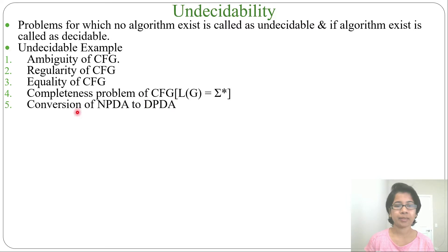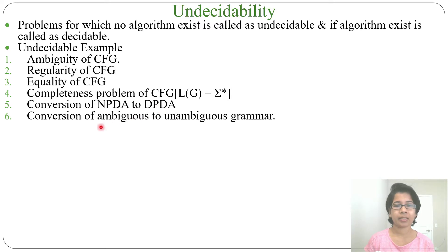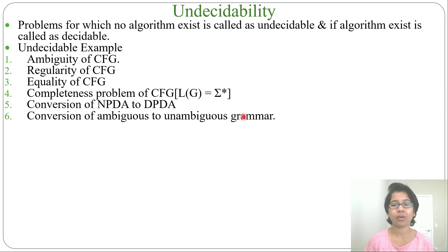Next problem: conversion of NPDA to DPDA — you cannot convert an NPDA to a DPDA. This is undecidable. Next is conversion of ambiguous to unambiguous grammar. This is undecidable. We cannot convert an ambiguous grammar to an unambiguous grammar. Only specific types of grammar, like operator grammar, can be rewritten as an unambiguous grammar. Except for operator grammar, you cannot convert ambiguous to unambiguous.